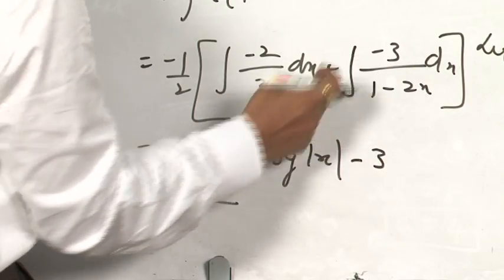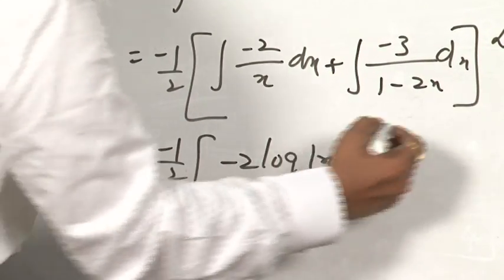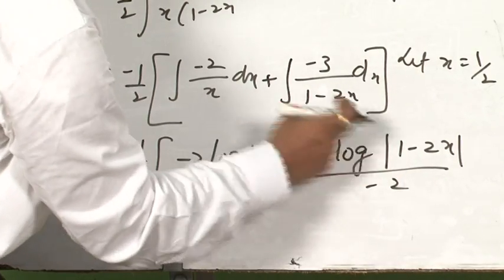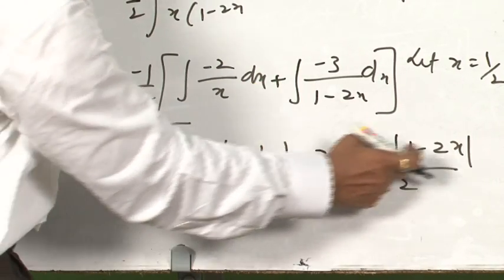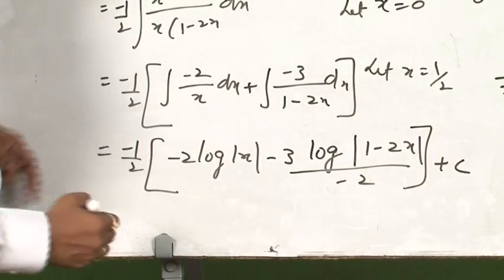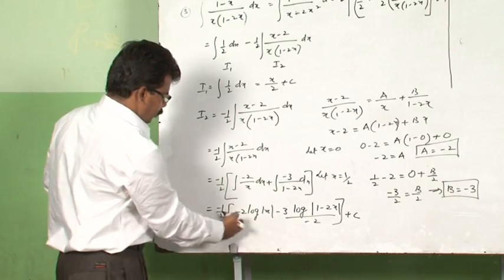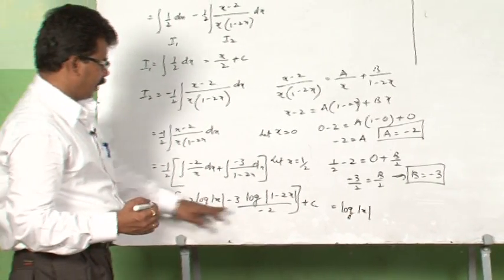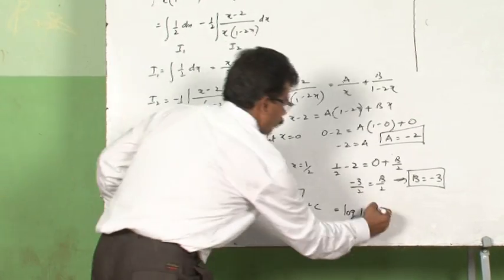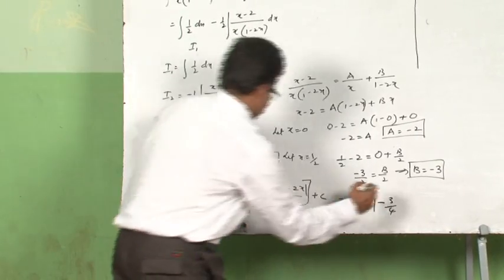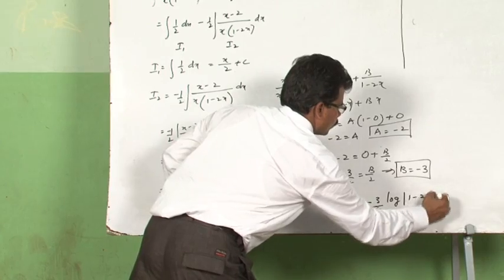This minus 3 I have written here. What is the integration of 1/(1 minus 2x)? That is log|1 minus 2x|, but recall — whole divided by minus 2 because minus 2x is there. Therefore the integral of 1/(1 minus 2x) is log|1 minus 2x| divided by minus 2. If you simplify the answer, multiplying through, you will get log|x| and, after simplification with three minus signs, minus 3/4 log|1 minus 2x| plus C. So this is only I₂.